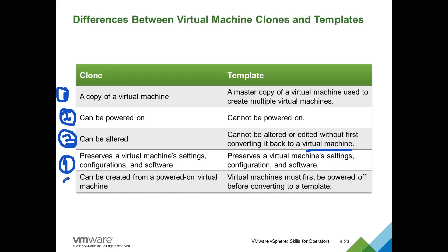The last difference: a clone can be created from a powered-on virtual machine. When a virtual machine is in the power-on state, it is not an issue — you can still create a clone. This is a very important difference. Whereas for a template, the virtual machine must be powered off first. You have to stop all applications and power off the virtual machine. Only then will the 'convert to template' option be enabled. Otherwise it will be disabled — you cannot convert a virtual machine into a template if it is powered on.